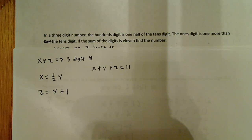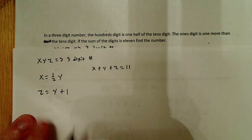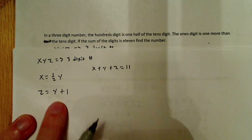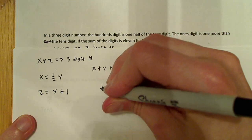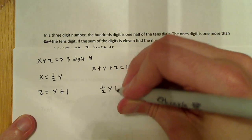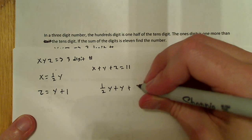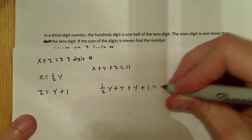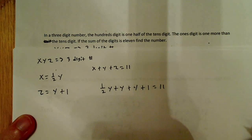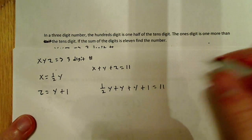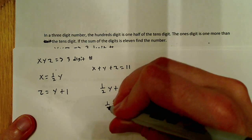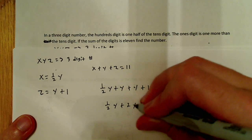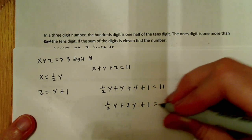Now I have three equations and three unknowns, so I should be able to solve the problem. The most convenient thing to do is take these, which are already all defined in terms of y, and plug them in for x and z. So I'm going to say one-half y plus y plus y plus 1 is equal to 11. Combining y plus y gives 2y, so one-half y plus 2y plus 1 is equal to 11.